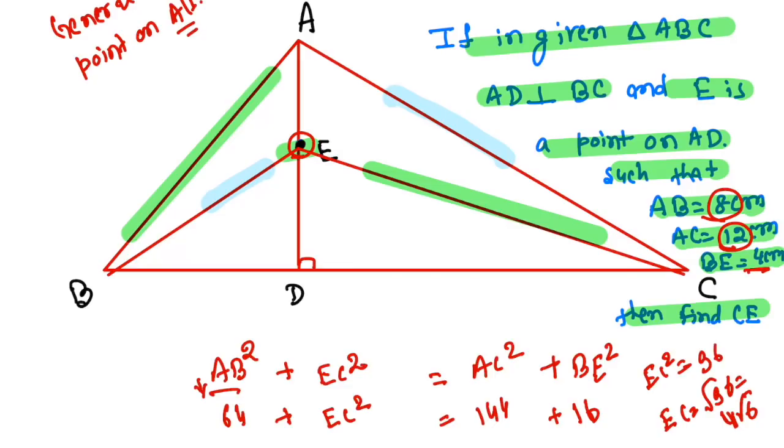So we can say EC is nothing but √96 or 4√6. So the answer of this question is nothing but 4√6. And this one is quite easy if you know general point on altitude concept.